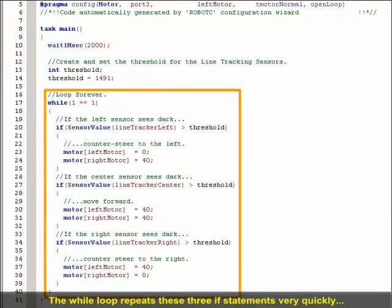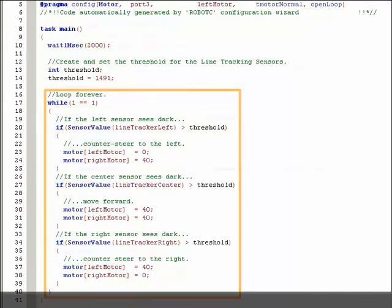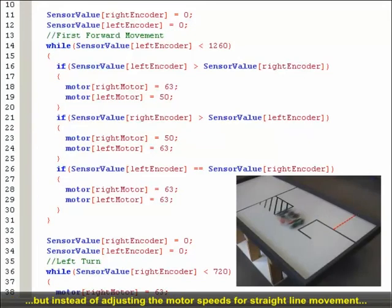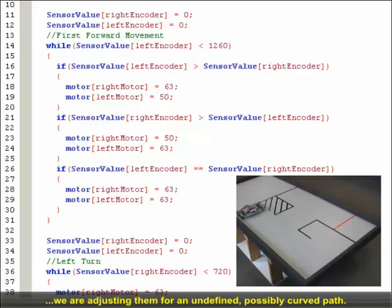The while loop repeats these three if statements very quickly, which in turn allows the robot to check the surface and adjust its motor speeds to stay on the line very quickly. This method of adjusting motor speeds based on sensor feedback may look familiar to you. It's very similar to the auto-straightening code we used with the shaft encoders, but instead of adjusting the motor speeds for straight line movement, we're adjusting them for an undefined, possibly curved path.